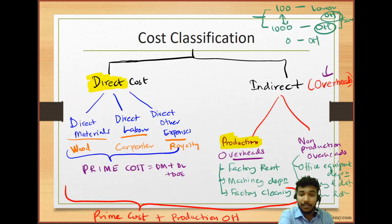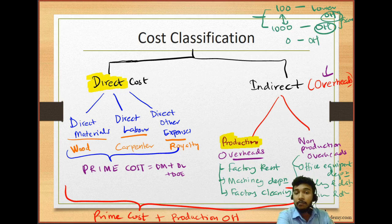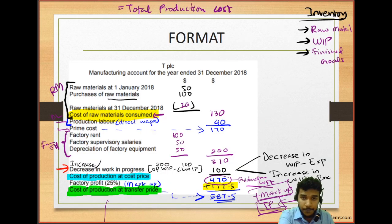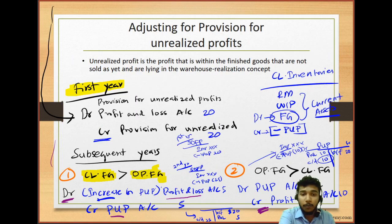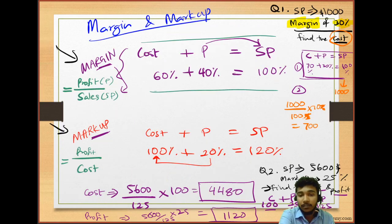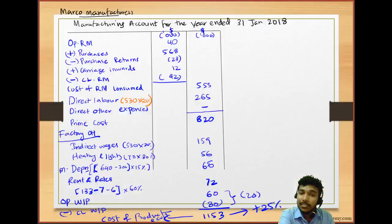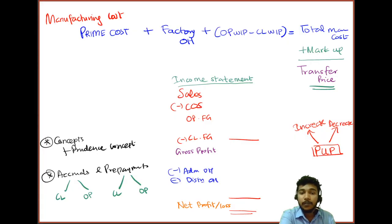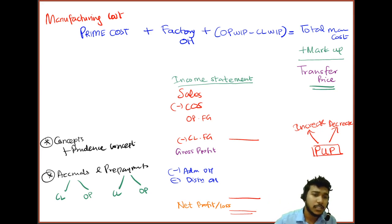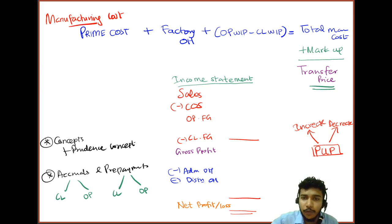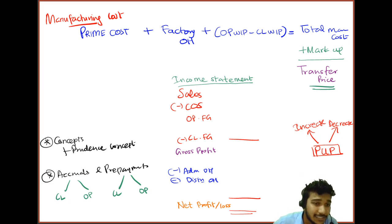This is the basics — knowing which cost elements will be treated as manufacturing cost and which will be written off in the P&L. Manufacturing cost is the total prime cost, plus factory overheads, adjusted for the work in progress inventory level differences.